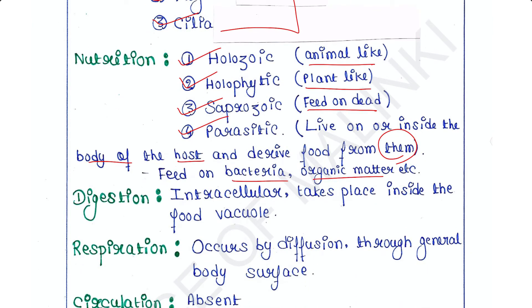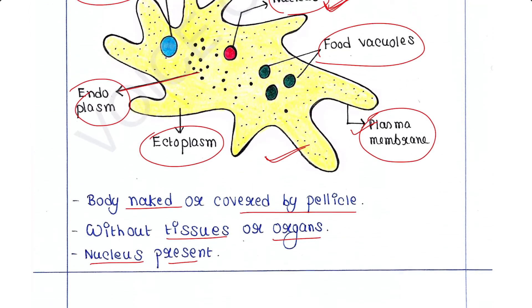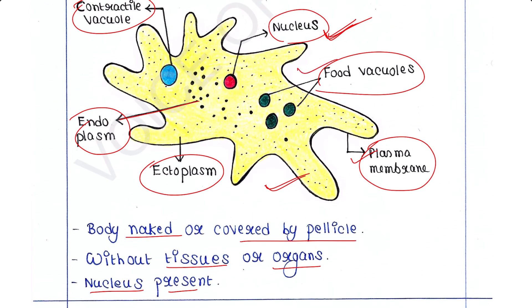Digestion: intracellular digestion occurs. Intracellular means digestion takes place inside the cell, particularly inside the food vacuole. Food vacuoles we have seen here, these are food vacuoles, and digestion takes place inside these food vacuoles.